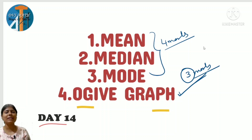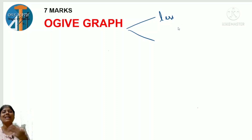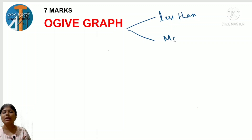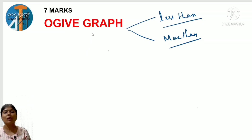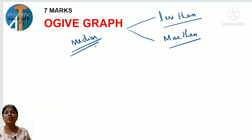So regarding ogive graph, how questions will be asked and how to answer them - let us discuss. In ogive graph there are two types: less than type ogive and more than type ogive. Graphically you represent the data, and from the graph you can find the median. The question asked is: which measure of central tendency can be represented graphically?